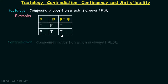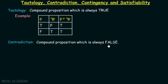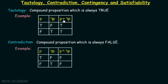Contradiction is a compound proposition which is always false. Instead of OR, we place AND, and then it will always result in a false value. Therefore, p AND NOT p is a contradiction.